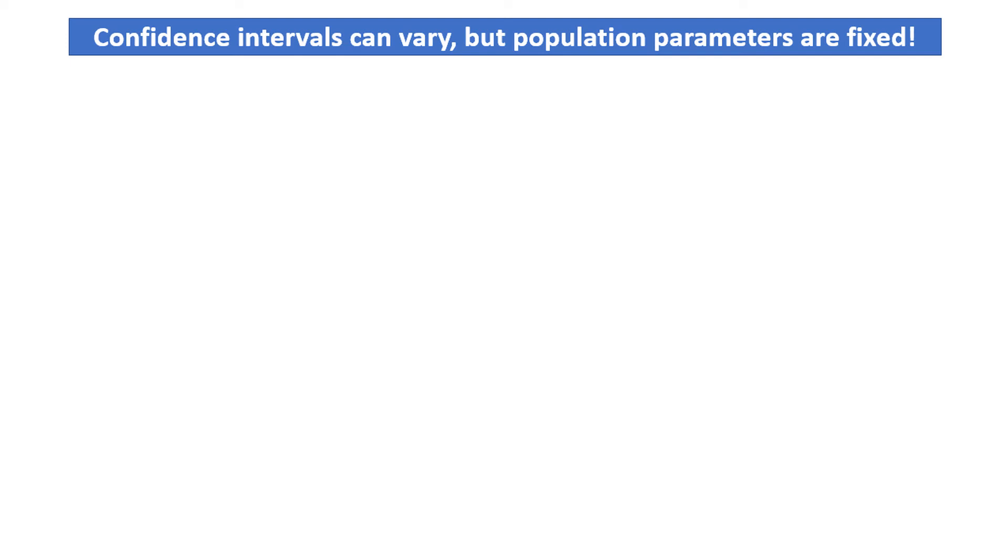For example, let's say that the population mean of some population is 100. In the real world, we would never know this value, which is the whole reason why we compute confidence intervals in the first place. Visually, consider a number line with the mean centered in the middle.